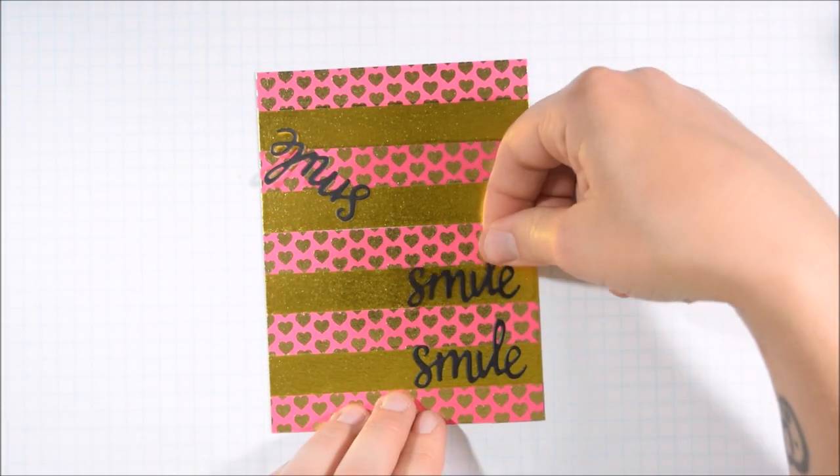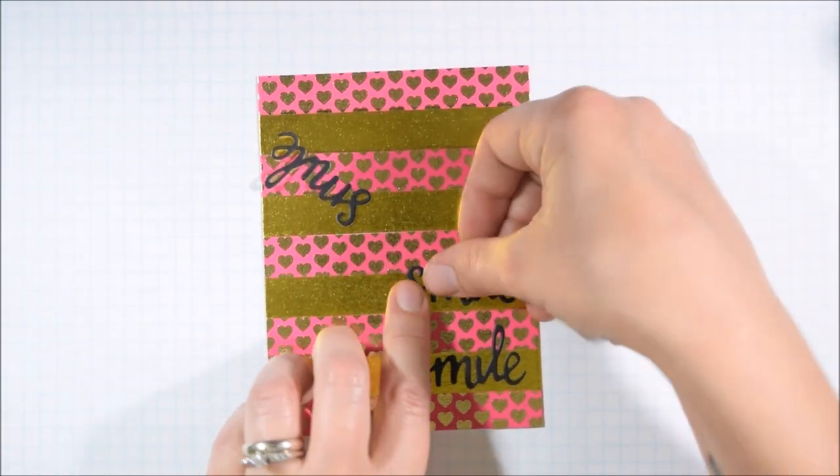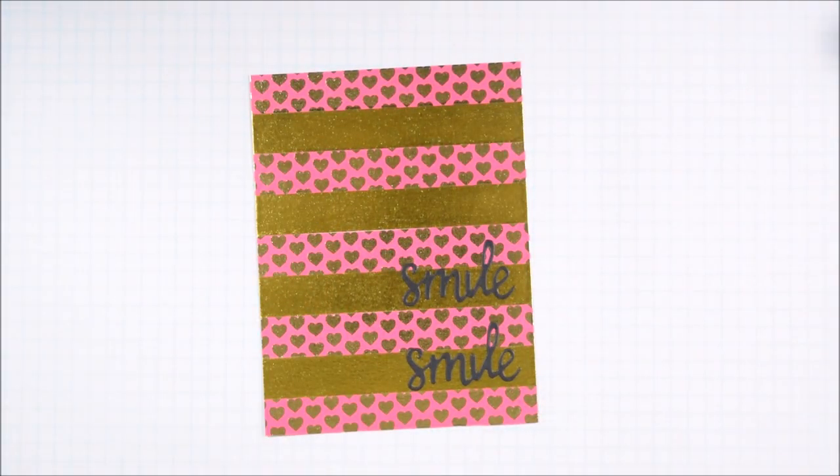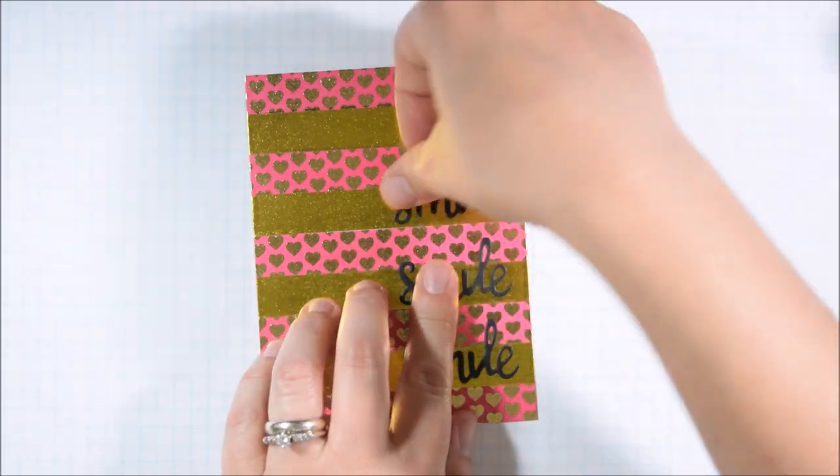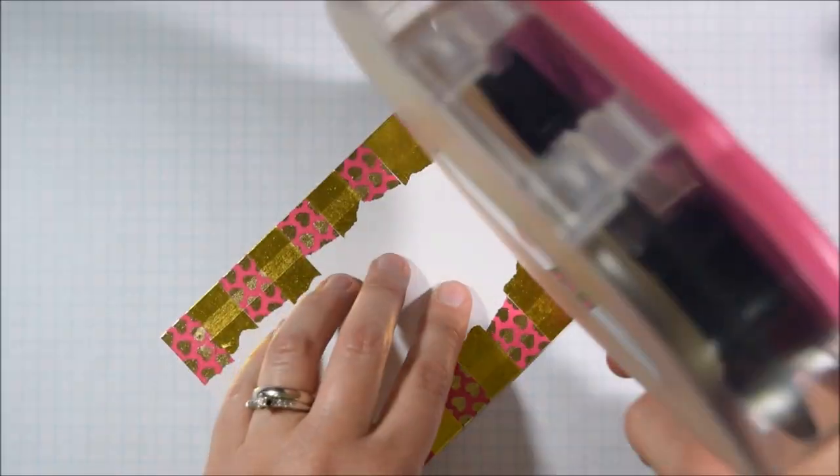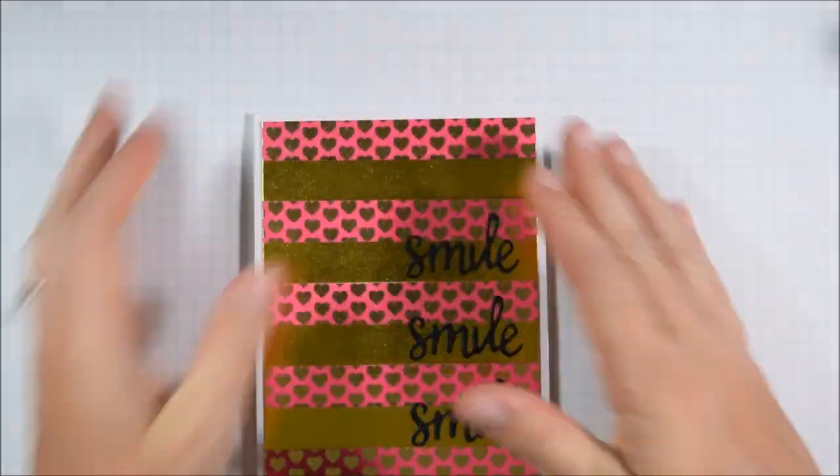As you can see that's what I decided to do and I thought, you know, going with just three would be good because things tend to look a little better in odds. Then I'm going to just place this on a card base and let that really pretty washi just kind of do its thing and be the focal point of this card.